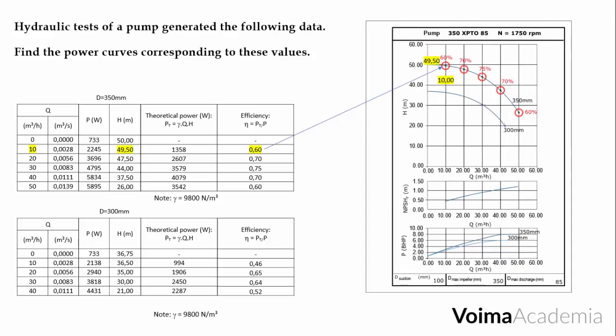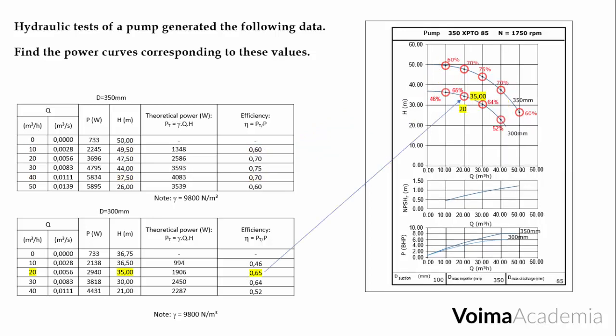We fill the graph with the values of power that we have found. Here is an example for the 350 mm impeller and another one. We do the same for the 300 mm impeller. Here is an example and another one.